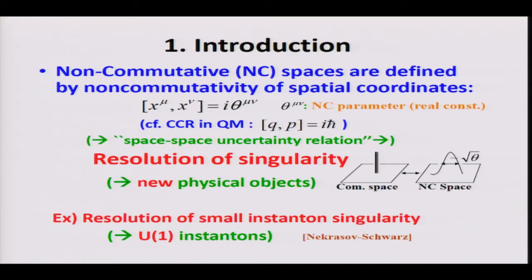This real constant just corresponds to a constant background magnetic field in physics. Discussing some properties naively from the definition: this relation looks like the canonical commutation relation in quantum mechanics, and very naively this leads to a space-space uncertainty relation — we cannot determine all coordinates of a particle's position. The configuration becomes wave-packet-like. Resolution of singularity is a very interesting property in non-commutative spaces, where singularities that exist on commutative spaces become resolved, and new physical objects appear.